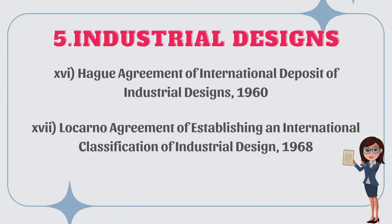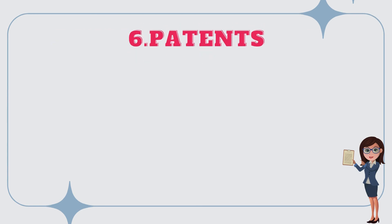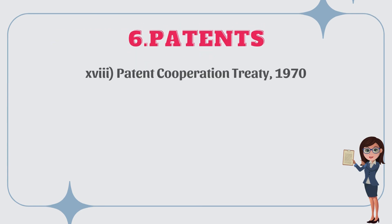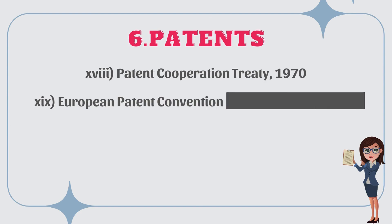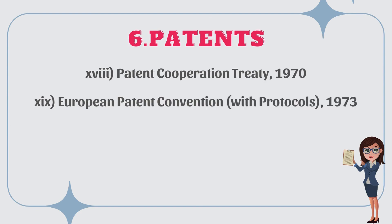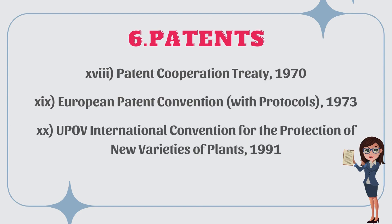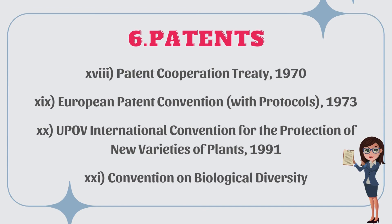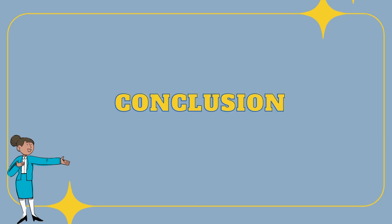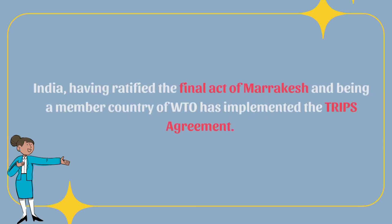Number five, industrial designs: the Hague Agreement for International Deposit of Industrial Designs 1960; the Locarno Agreement establishing an International Classification of Industrial Designs 1968. Number six, patents: the Patent Cooperation Treaty 1970; the European Patent Convention with protocols 1973; the UPOV International Convention for the Protection of New Varieties of Plants 1991; and the Convention on Biological Diversity.